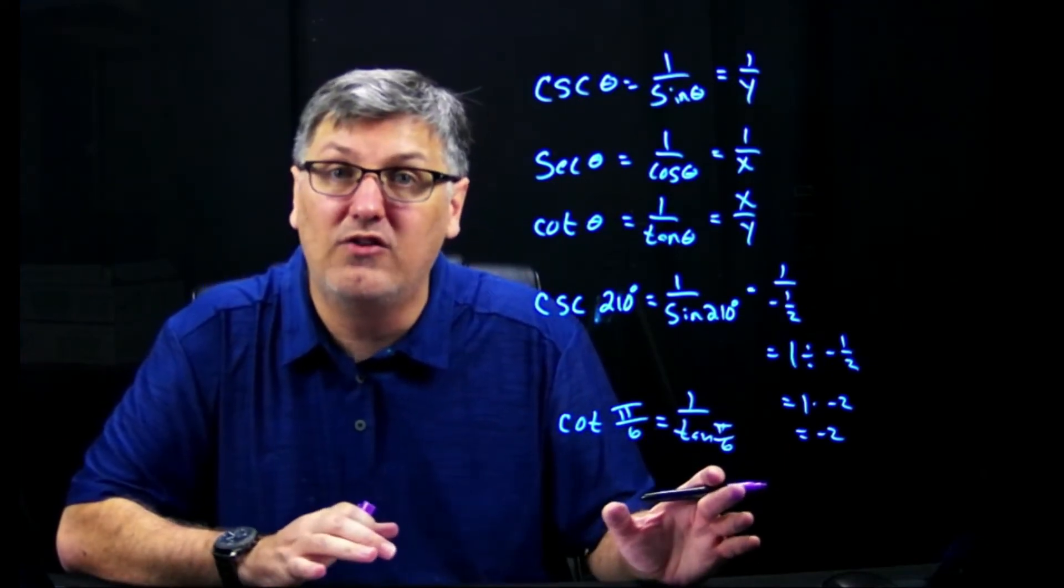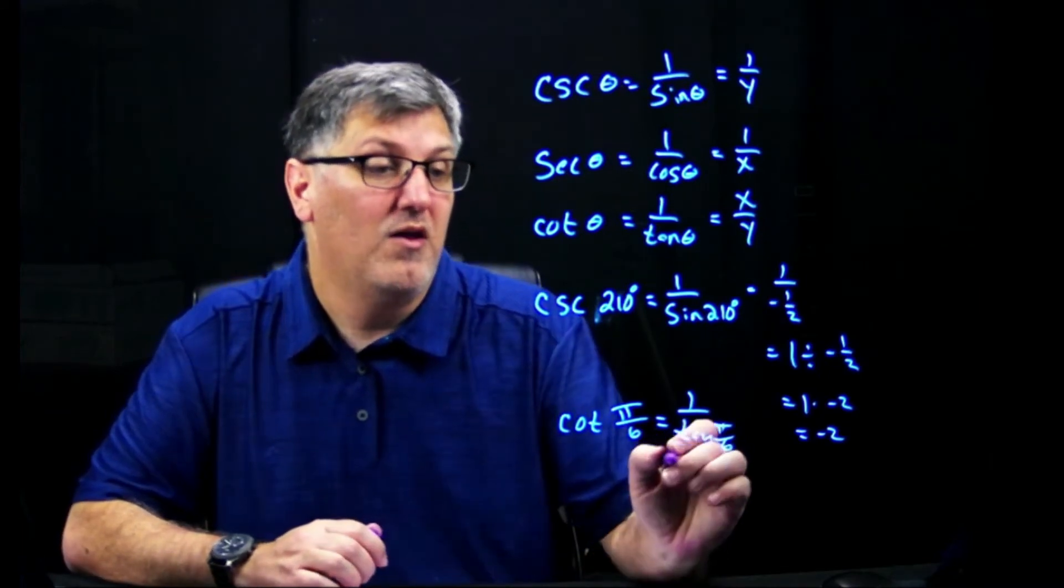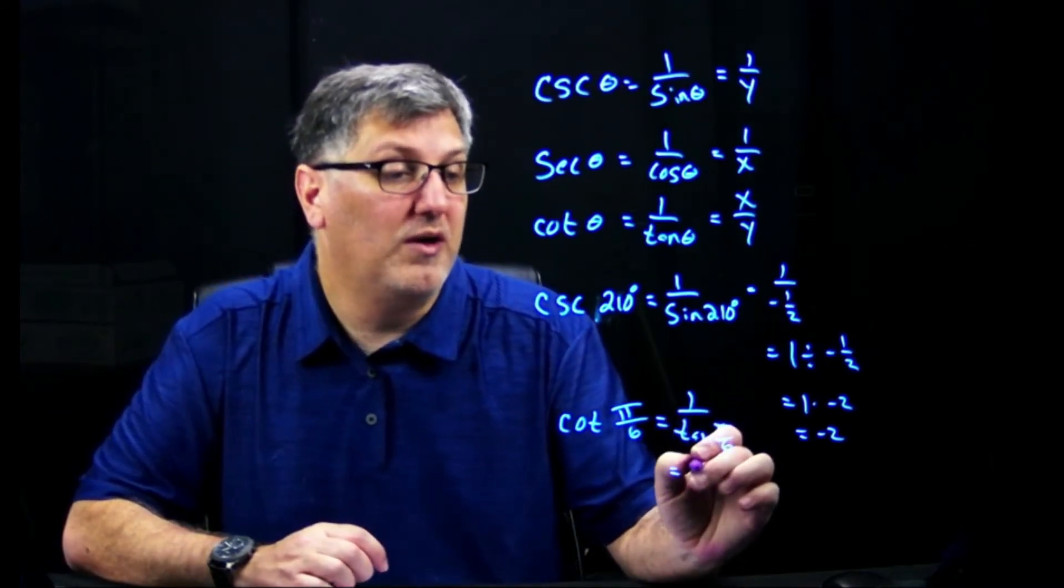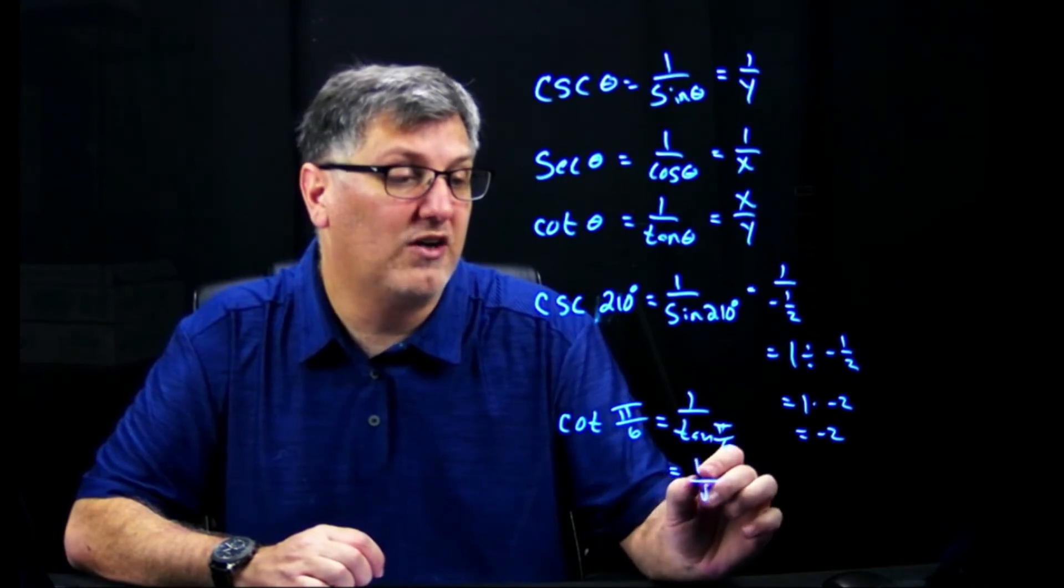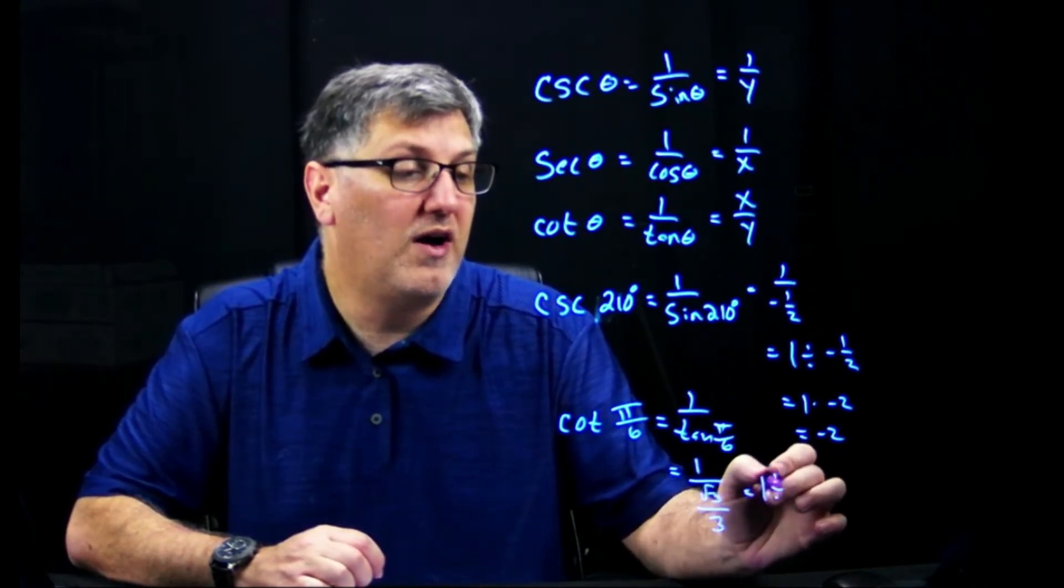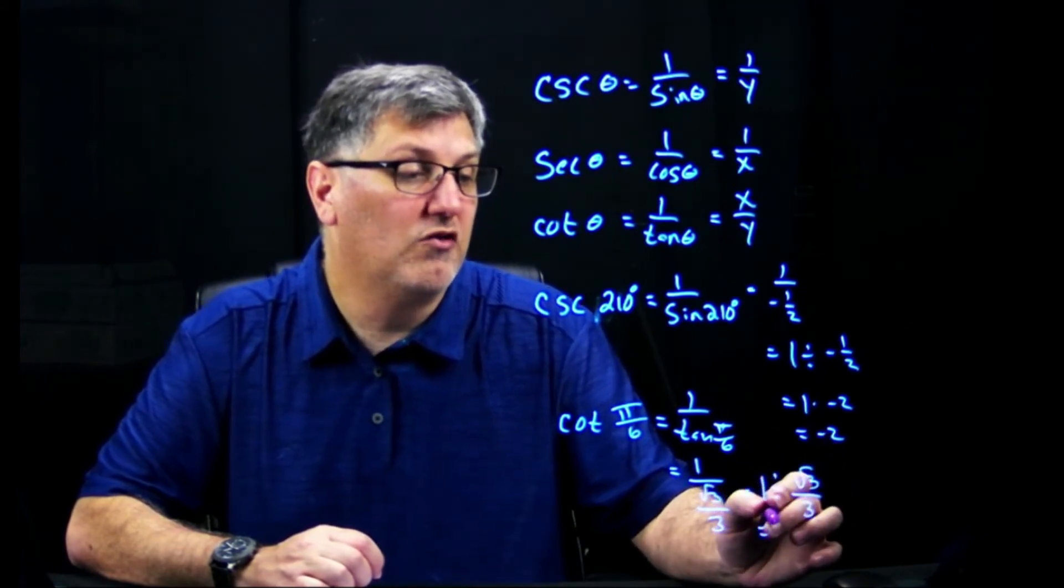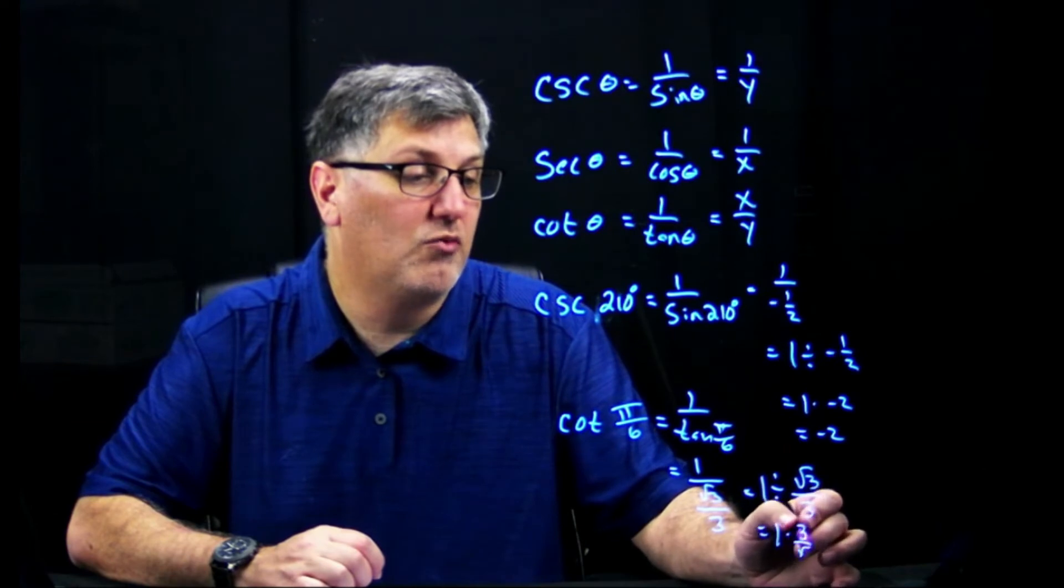I am going to ask you to memorize it, but with y'all being virtual students, there's no way I can check that. All right, so this really means 1 over, well, tangent of pi over 6 is square root of 3 over 3. This really means 1 divided by the square root of 3 over 3, which gives me 1 times 3 over the square root of 3.